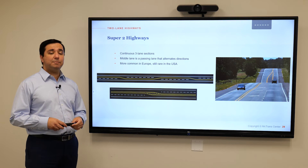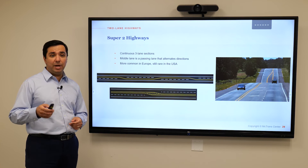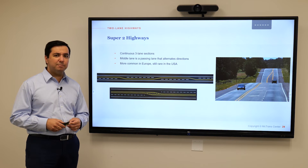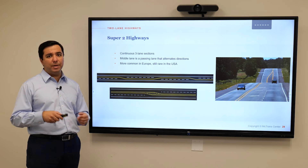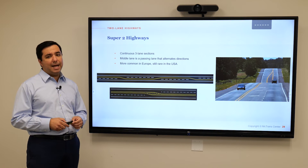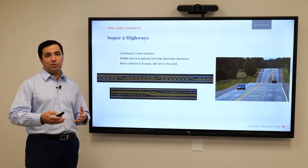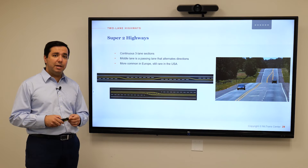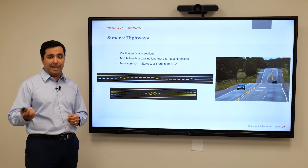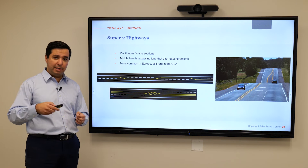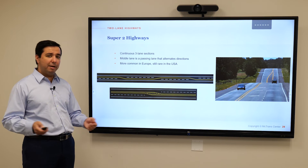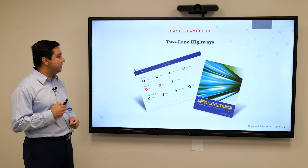Another big feature that has been added is that now we can do analysis for Super 2 highways. These are common facilities mostly in Europe, but nowadays we see more and more of them in the United States as well. Basically, these are three-lane stretches of roadway where the middle lane changes direction alternately for the two sides, acting as an added lane in an alternating fashion for each direction. Now we are able to perform this analysis given the new methodology.